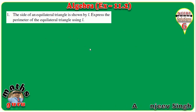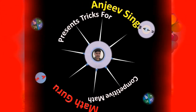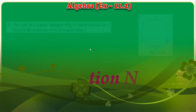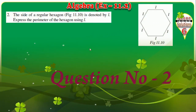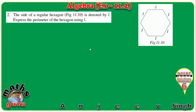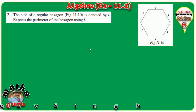The second question is: the side of a regular hexagon is denoted by L. Express the perimeter of the hexagon using L. A hexagon has 6 sides: 1, 2, 3, 4, 5, 6. So the perimeter of the hexagon is L plus L plus L plus L plus L plus L, which equals 6L. The answer is 6L.